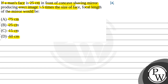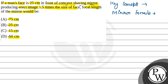First of all, we will see the key concept of the question. In this question we are talking about the concave shaving mirror. In a mirror, we will use the mirror formula. What is the mirror formula? That is: 1 by V plus 1 by U is equal to 1 by F.